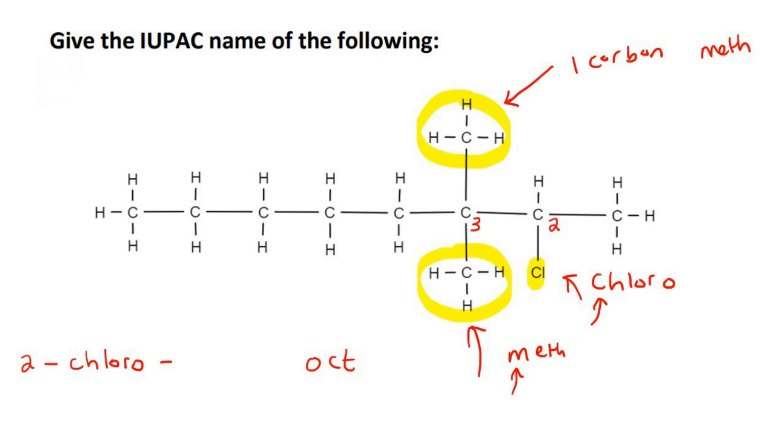Then on carbon number 3, there are two branches. So we'll say 3,3, and then you're going to say that that is a methyl. Methyl, but because there's two of them, you're going to say di, like that.